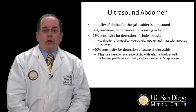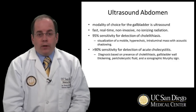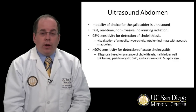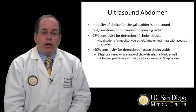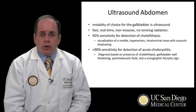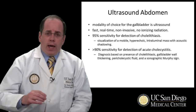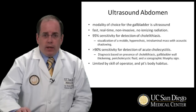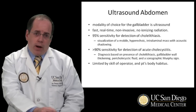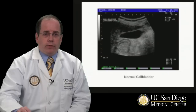For the detection of acute cholecystitis, ultrasound of the abdomen and of the gallbladder has greater than 90% sensitivity, and the diagnosis is based on the presence of cholelithiasis, gallbladder wall thickening, pericholecystic fluid, and a sonographic Murphy's sign. The ability to detect cholecystitis is limited by the skill of the operator and by the patient's body habitus.